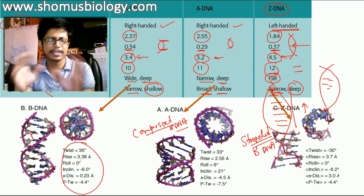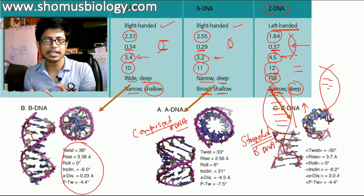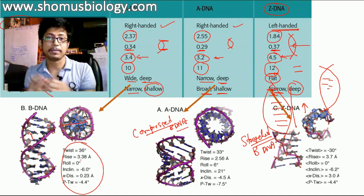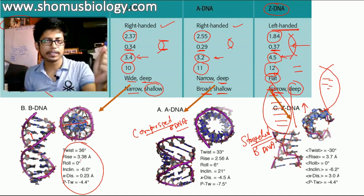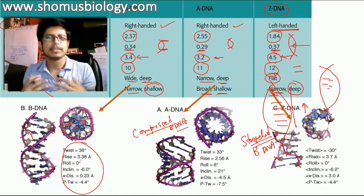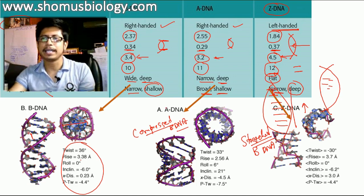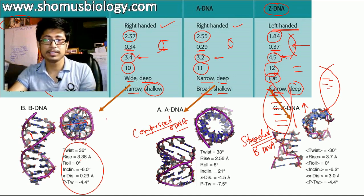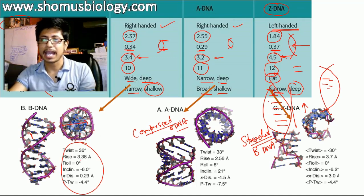But Z DNA is kind of stretched format of the B DNA. So, in a very simple summary, you can tell, if you compress B DNA, it becomes A, if you stretch B DNA, it becomes kind of Z DNA. So, that is the idea and the difference between the structural parameters between A DNA, B DNA and Z DNA.